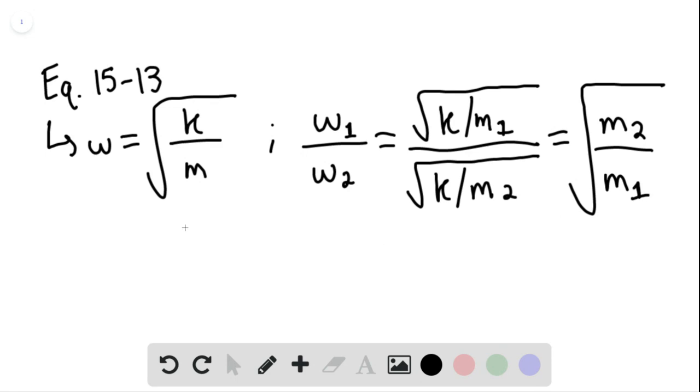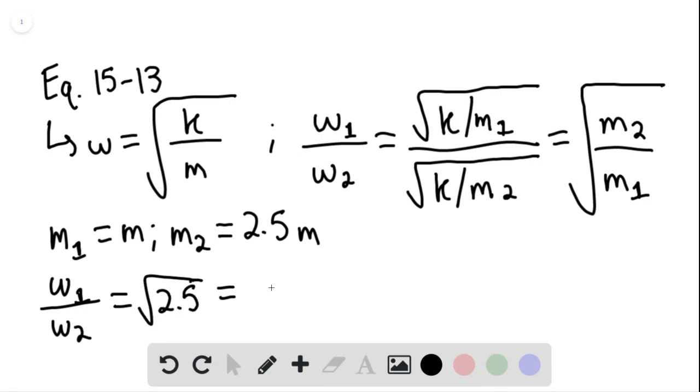We know that here we're going to say that m sub 1 is equaling some mass m and m sub 2 is equaling 2.5m. So essentially, this ratio is simplified to be equal to the square root of 2.5, and this is equaling 1.58. So this would be our ratio between the two angular velocities.